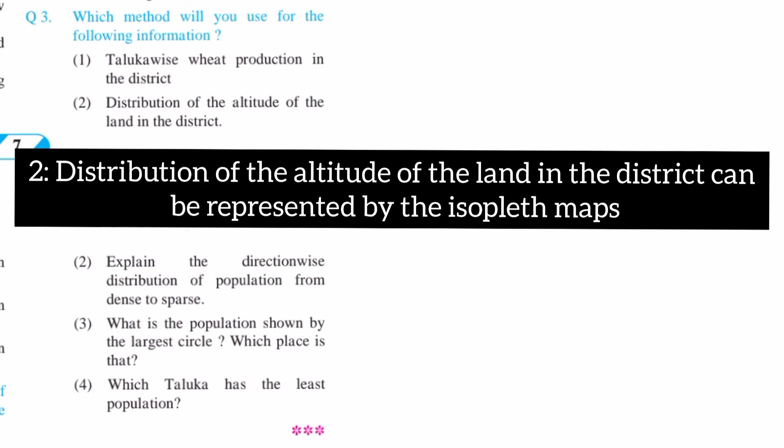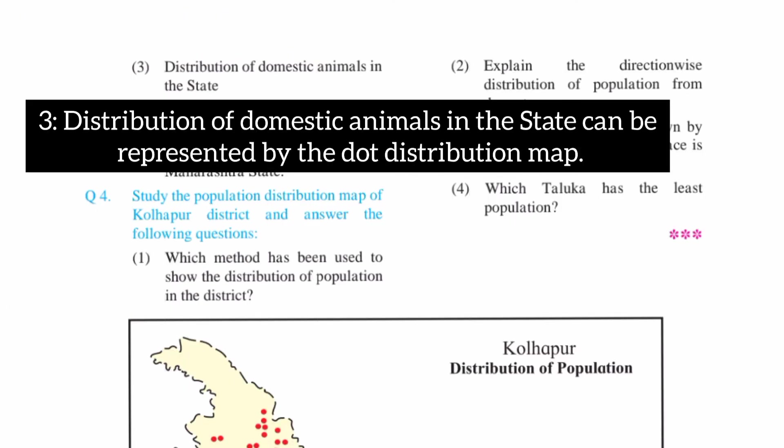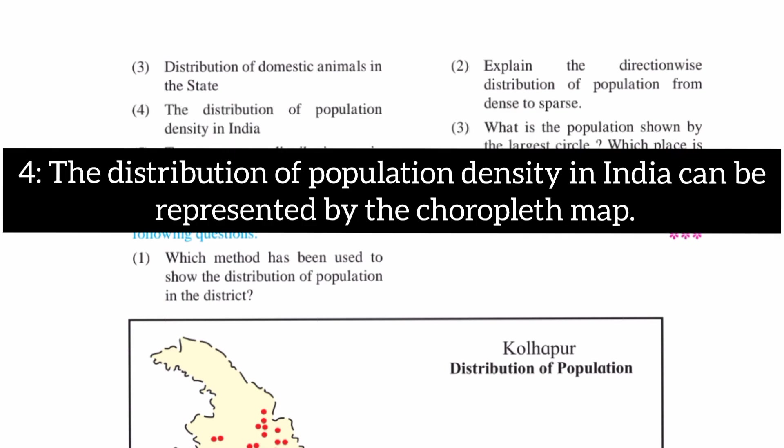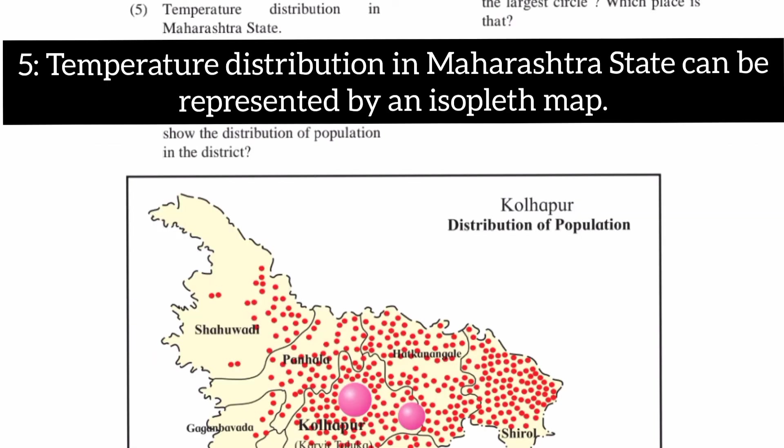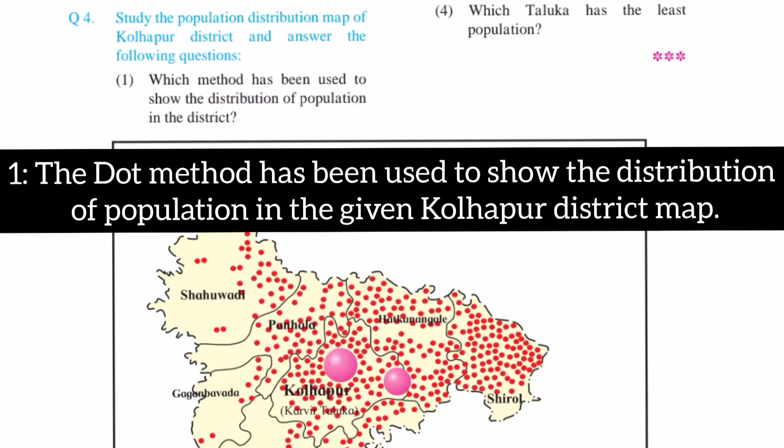2. Distribution of the altitude of the land in the district. 3. Prohibition of domestic animals in the state. 4. Distribution of population density in India. 5. Temperature distribution in Maharashtra state.